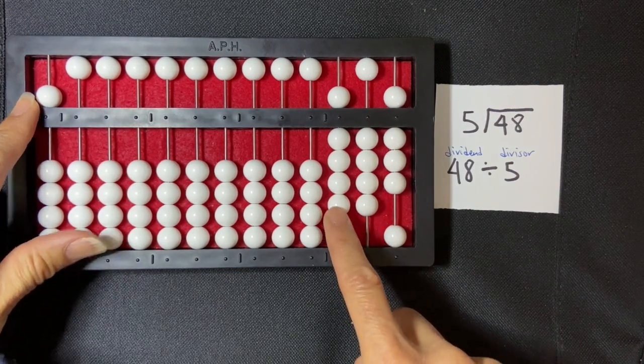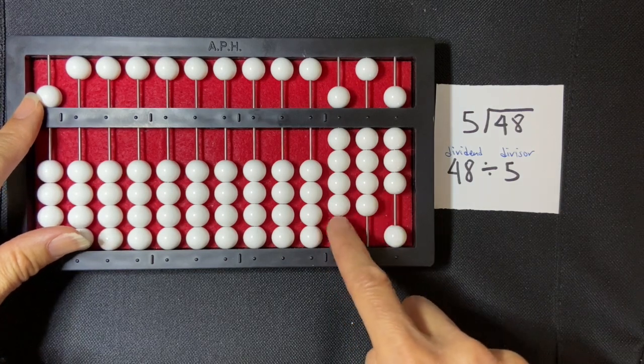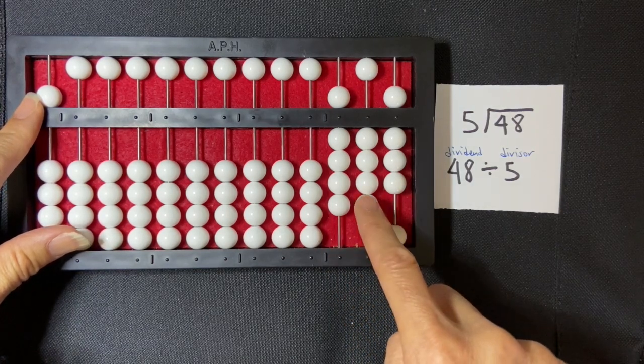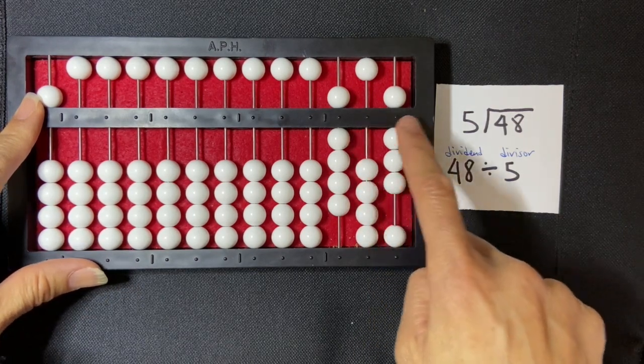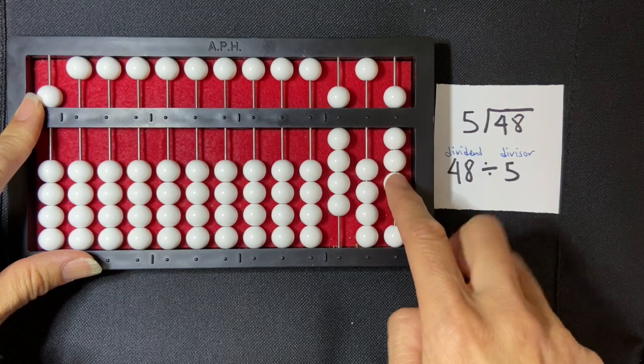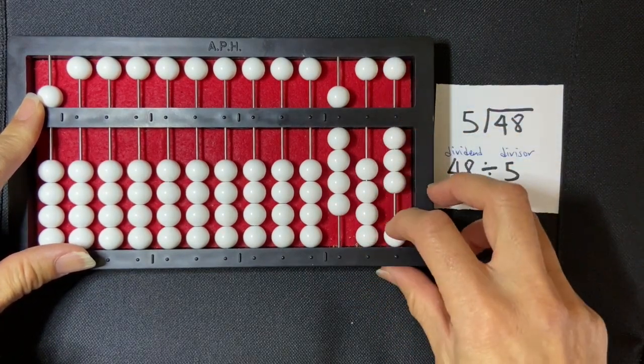And then I'm going to do my subtraction. 9 times 5 is 45. So I'm going to subtract the 40 from here: 1, 2, 3, 4. And then the 5 from my units rod: 1, 2, 3, 4, 5.